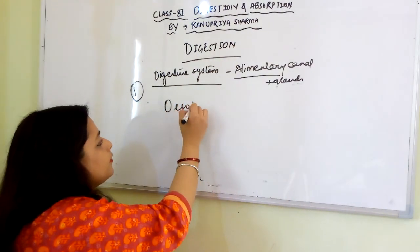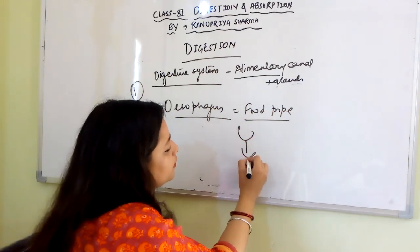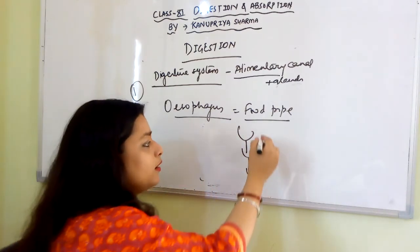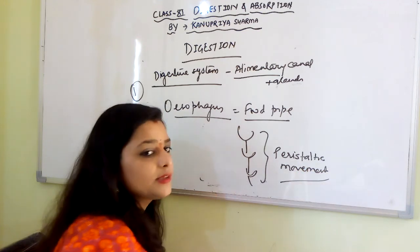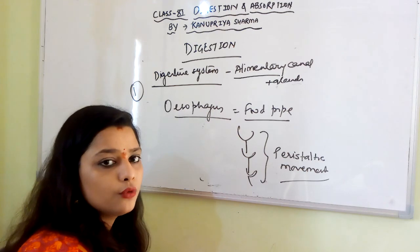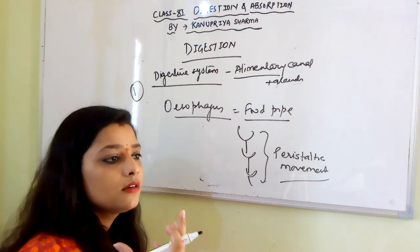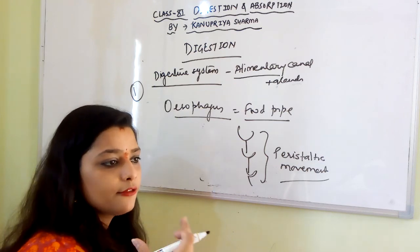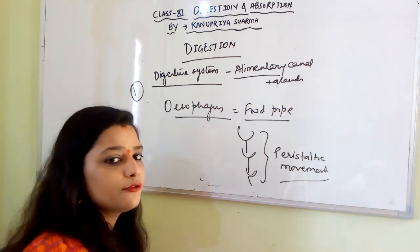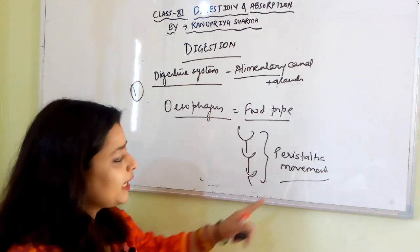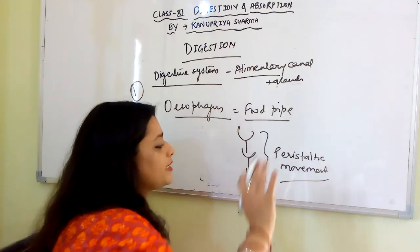The esophagus is the food pipe through which food moves in a regulated manner because of a movement called peristaltic movement. This peristaltic movement ensures that a controlled amount of food enters the next organ and keeps food moving forward so it doesn't accumulate at one place. Peristaltic movement happens throughout the entire alimentary canal.